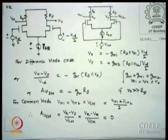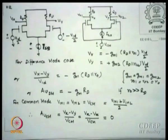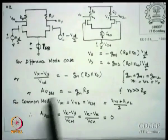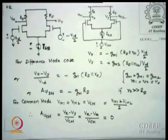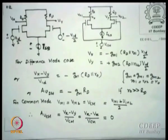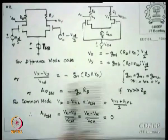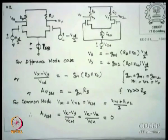For the difference mode circuit, Vx equals minus gm1·(RD parallel RO2)·(VID/2) and Vy equals gm2·(RD parallel RO2)·(VID/2). The difference gain is (Vx minus Vy)/VID. With gm1 equals gm2 equals gm and RO1 equals RO2 equals RO (identical transistors), the gain simply becomes gm·RD — nothing unexpected.